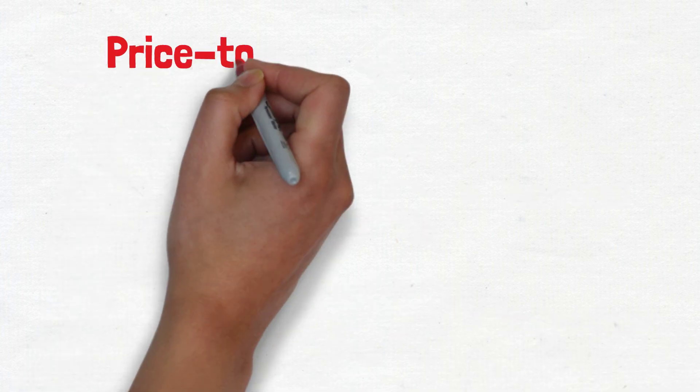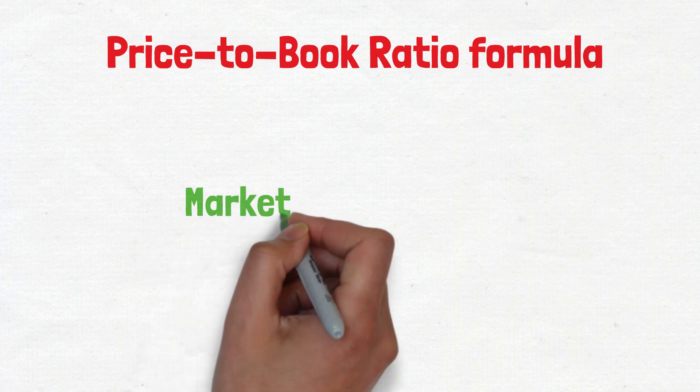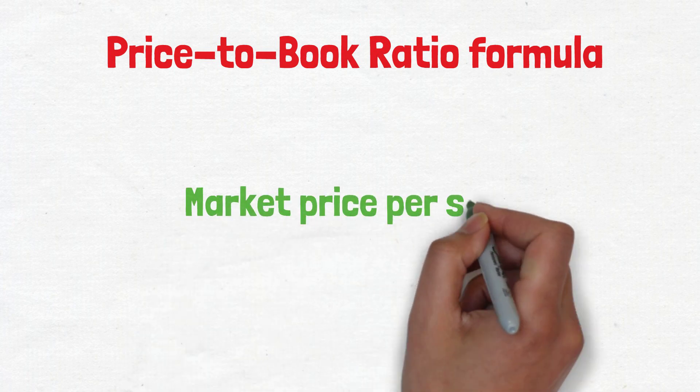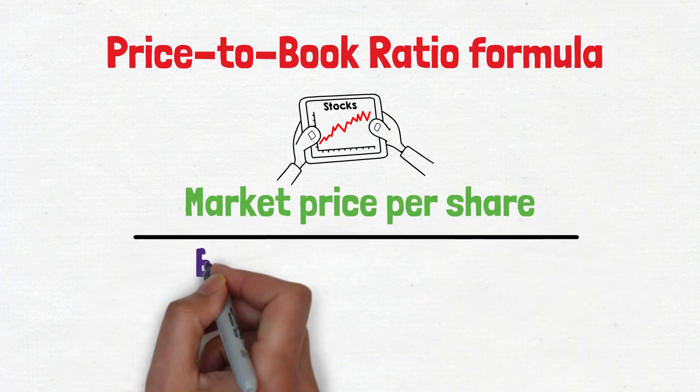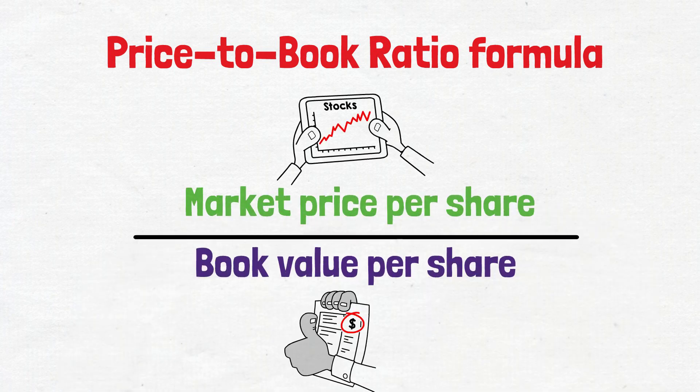Let's understand how to calculate the price-to-book ratio. Price-to-book ratio is market price per share divided by book value per share.